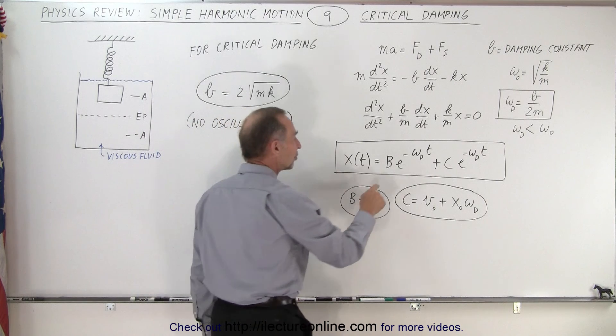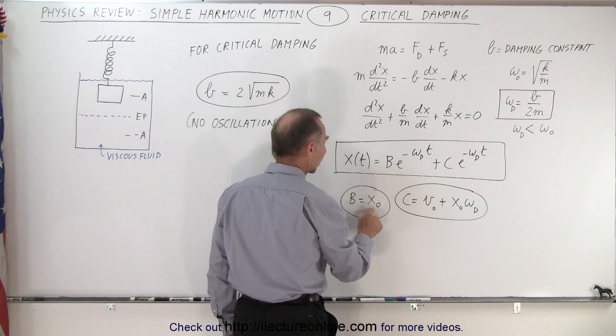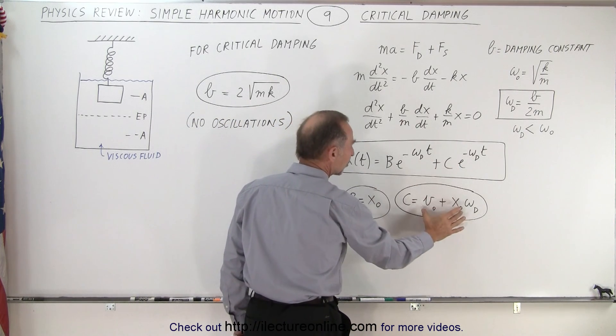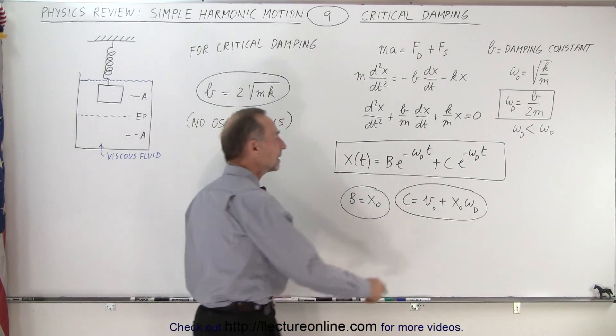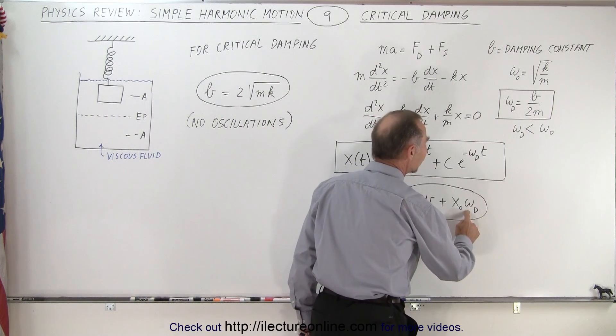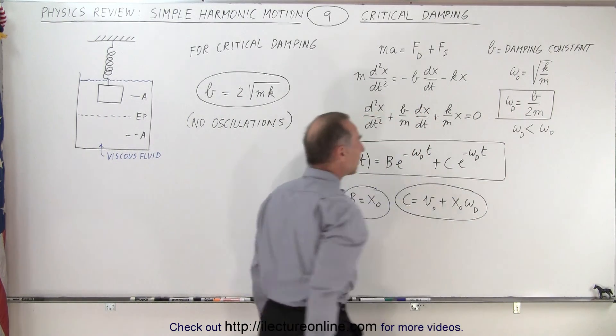And notice that we still have a value for B here, which is x sub naught, and the value for C, which depends on both the initial velocity and the initial position. Notice that the damping angular frequency is still equal to B over 2m.